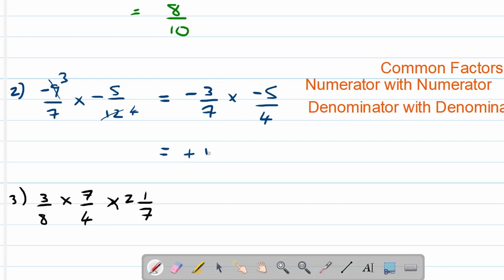3 times 5 is 15. And 7 times 4 is equal to 28. Do we have any common factors between these two? 15 and 28? No we don't. Therefore we are done with this question.